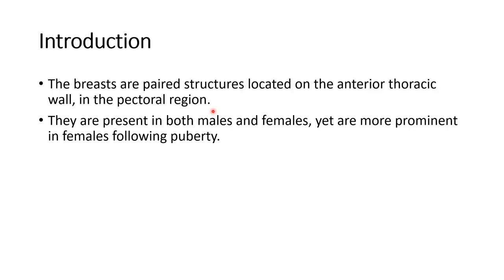It is good to write a few sentences as an introduction. The breasts are paired structures located on the anterior thoracic wall in the pectoral region. They are present in both males and females, yet are prominent in females following puberty.